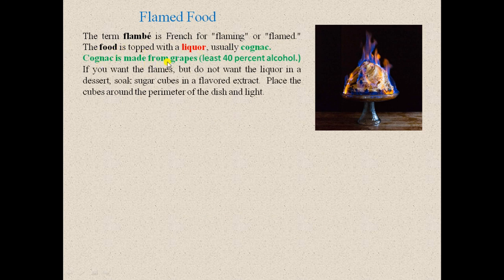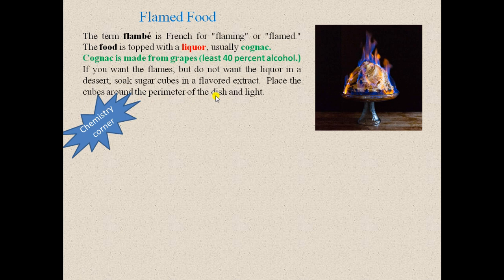Cognac is made from grapes and contains at least 40% alcohol. If you want the flames but do not want the liqueur in a dessert, soak a sugar cube in a flavoured extract. Place the cubes around the perimeter of the dish and light. Now the chemistry corner.